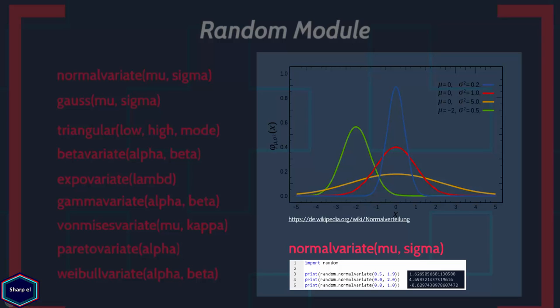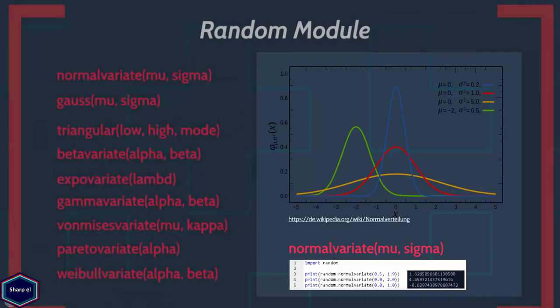The normal distribution can differ in its mean and standard deviation. The figure shows four different normal distributions with different means and standard deviations. The normalvariate() function takes two arguments, mean mu and standard deviation sigma, and returns a random number based on the normal distribution, as shown in this example.